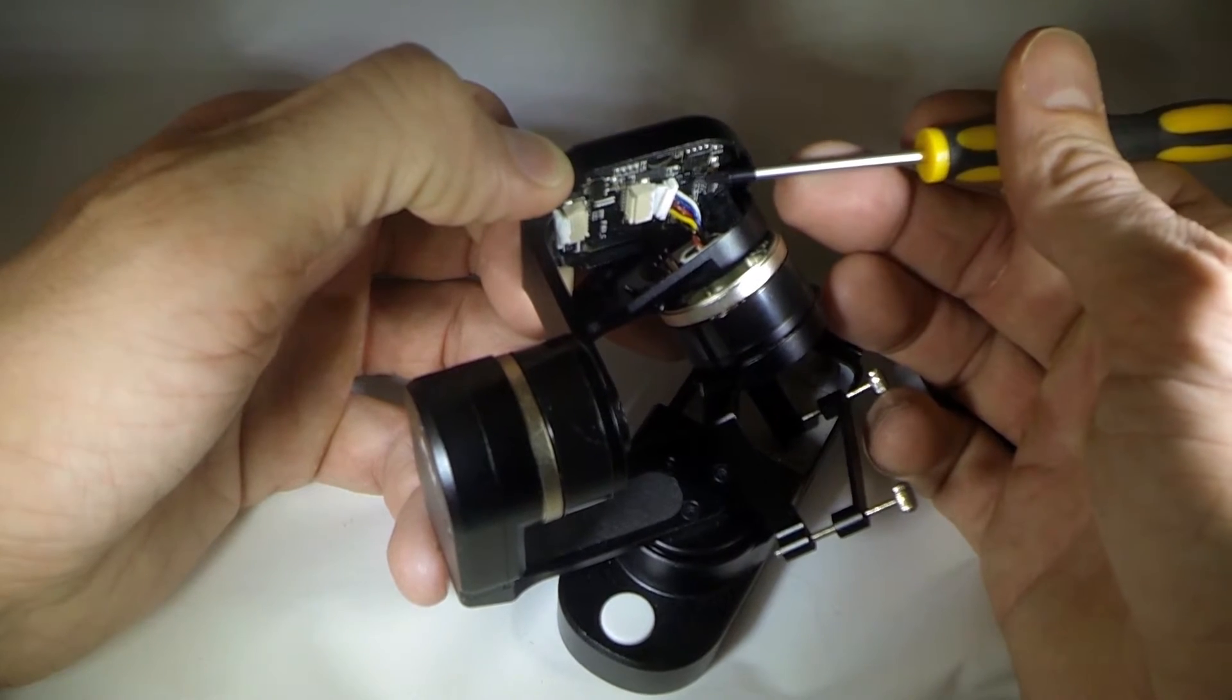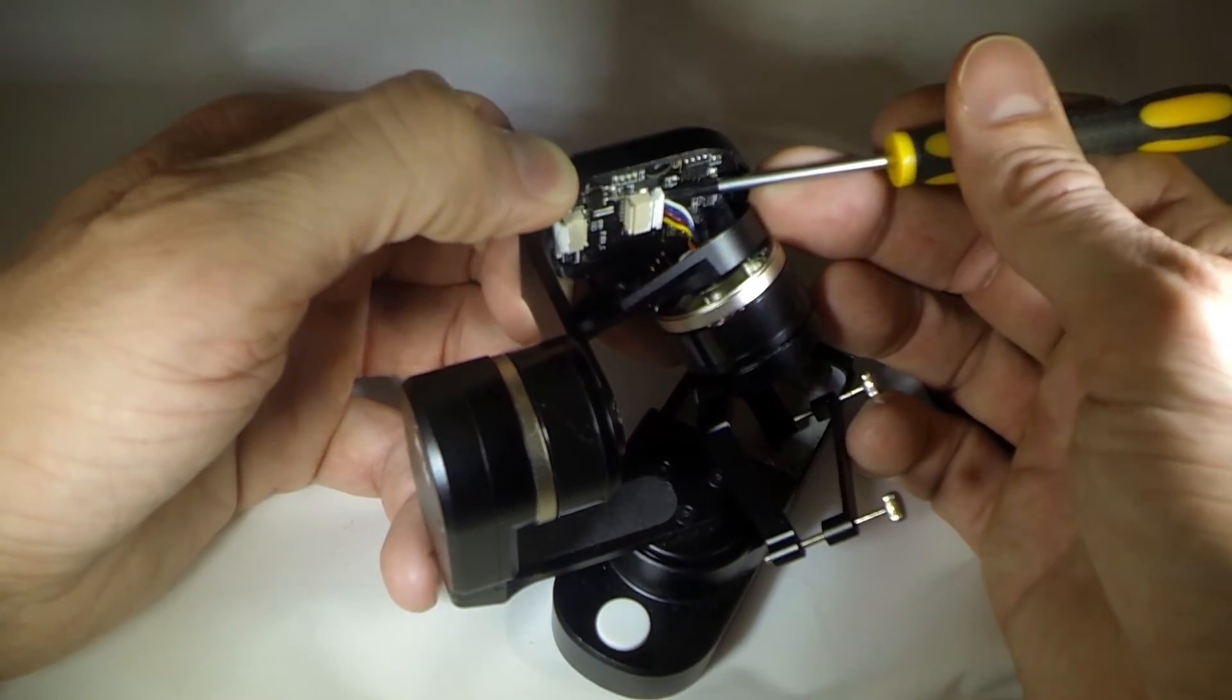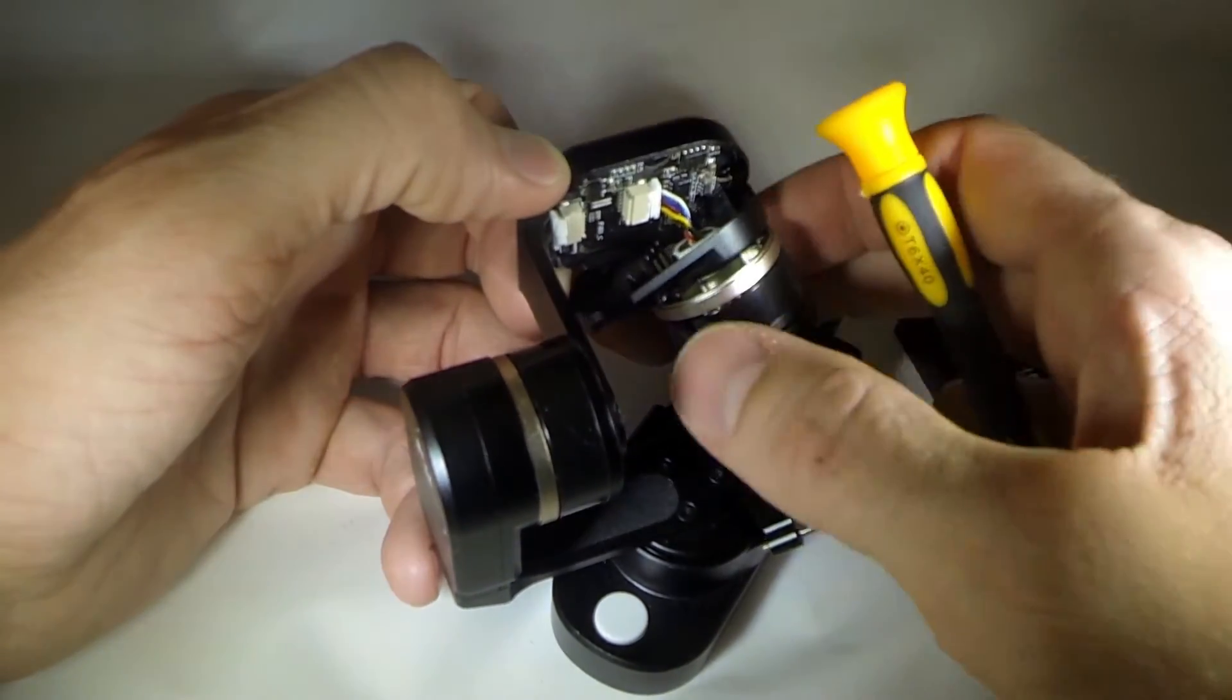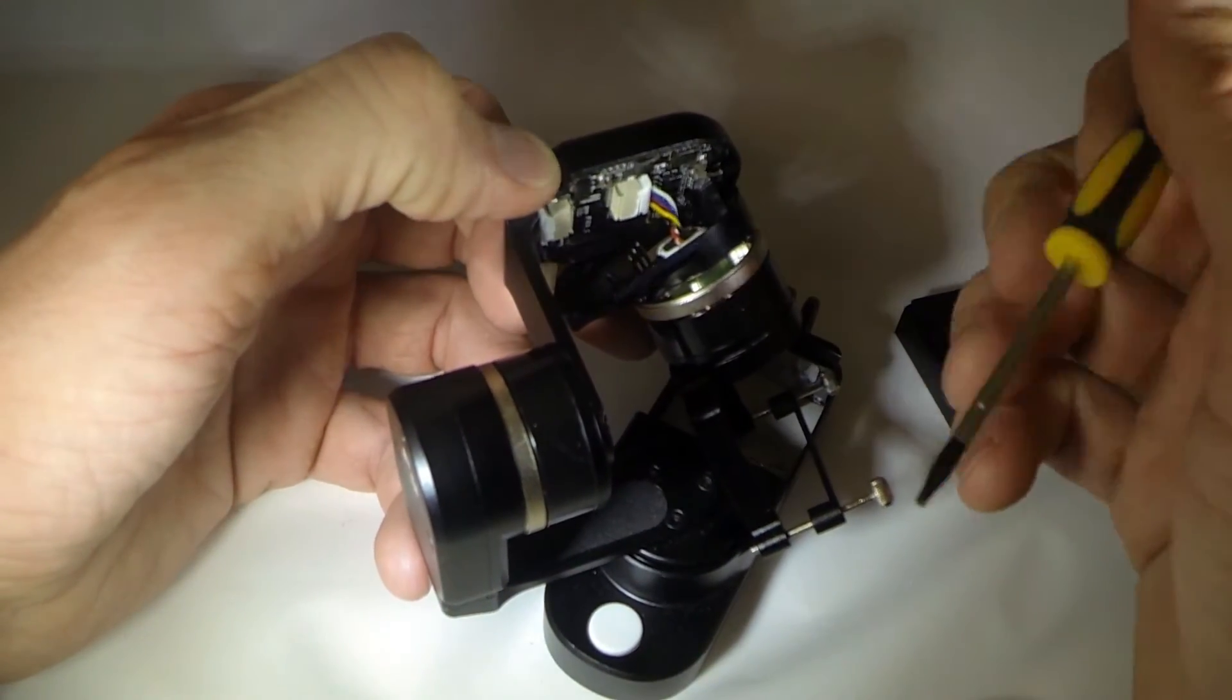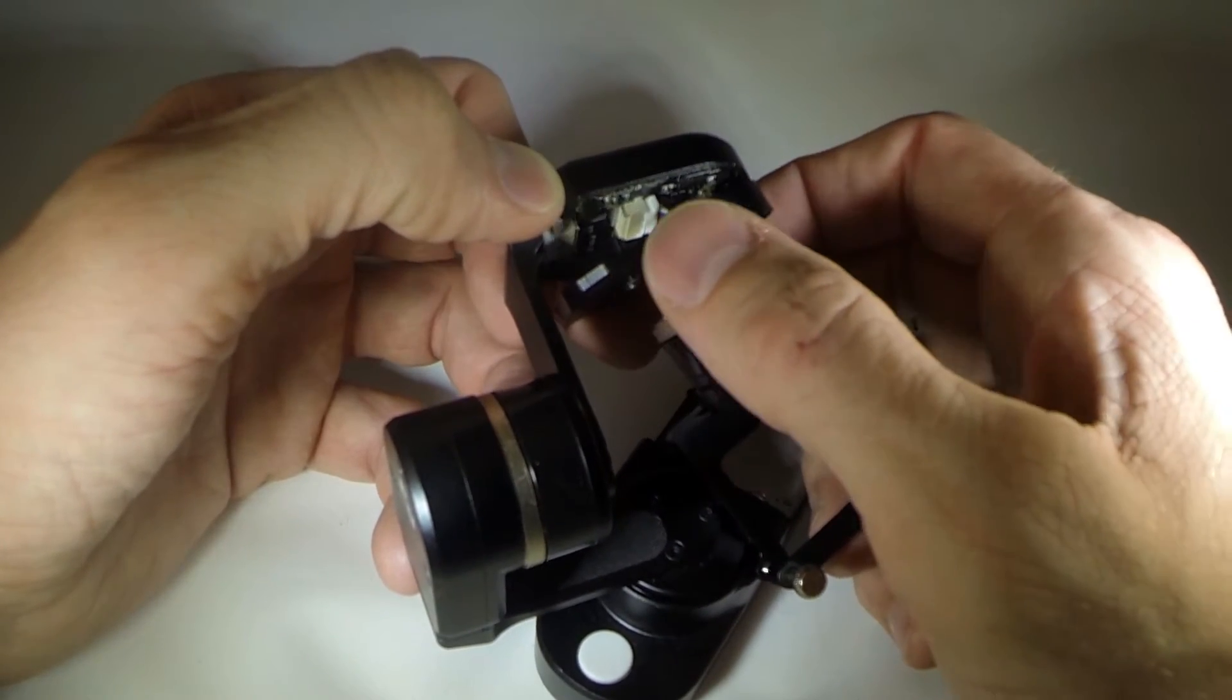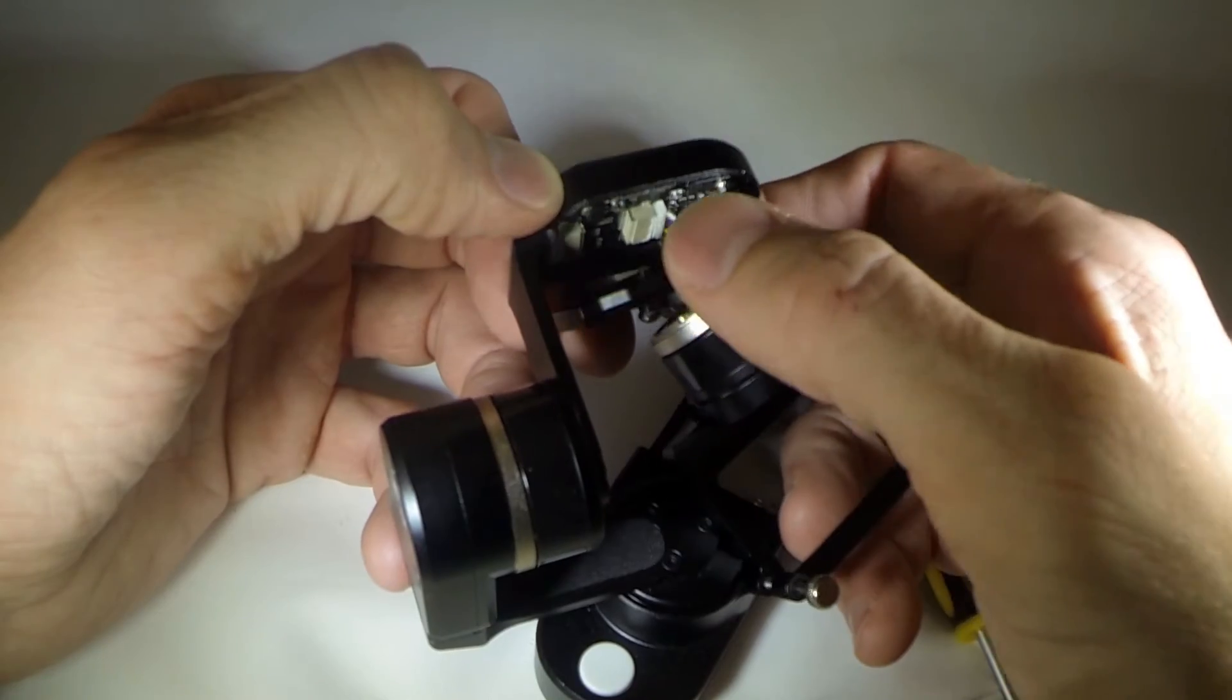So if yours is like mine, all you got to do, just push it back in there. Make sure it's secure. That's really it. If your wires right here are wound up too much, you can kind of spin that, unwind them a little bit, and simply reverse the procedure.